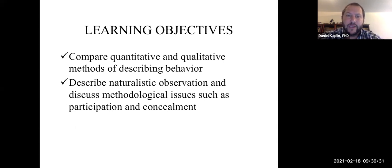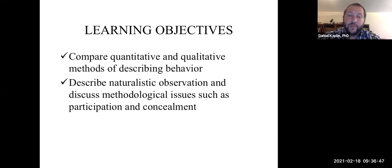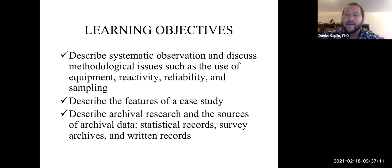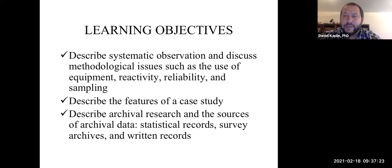Our first learning objective for the week is to compare quantitative versus qualitative methods for describing behavior. We'll talk about what the concept of a naturalistic observation is and discuss the methodological issues related to that, such as whether to participate when observing or whether to conceal yourself when observing, and the pros and cons of each. We'll also discuss systematic observation, issues of equipment, reactivity, reliability, and sampling. Then we'll shift into case studies and archival research.